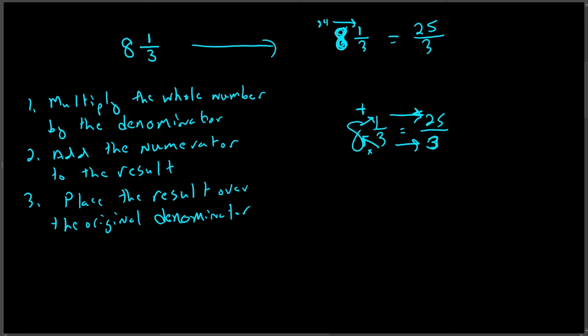So let's do one. Let's do five and two-sevenths. So I have five and two-sevenths. So I'm going to multiply this way. Seven times five is 35. Then I'm going to add this way. Thirty-five plus two equals thirty-seven-sevenths.